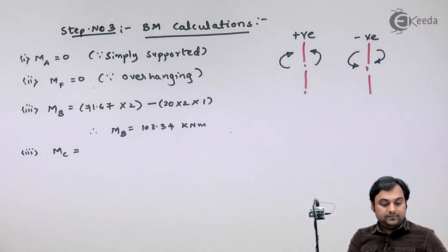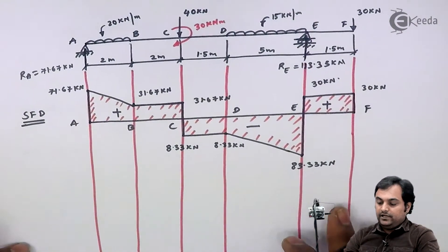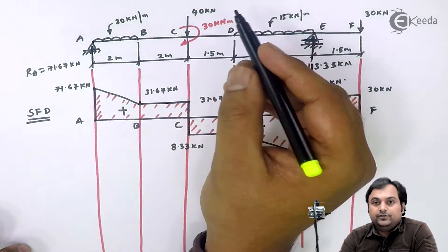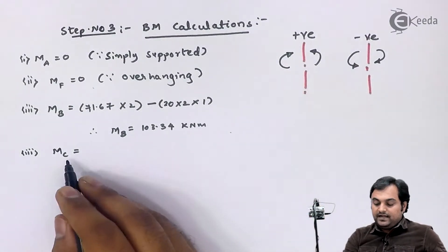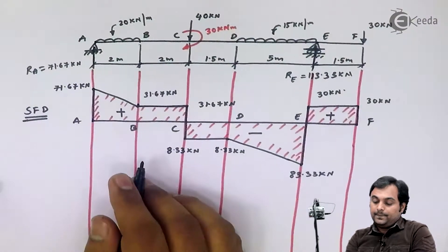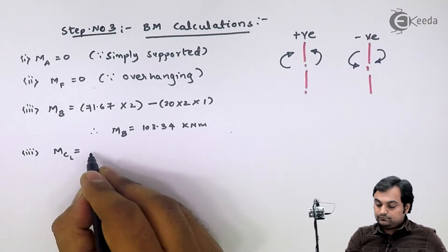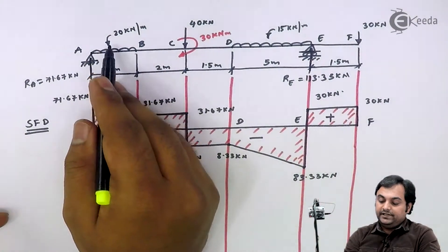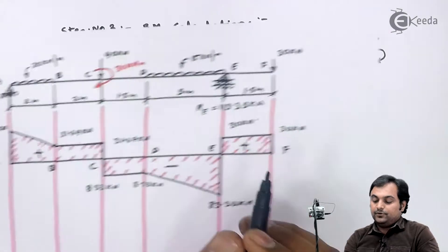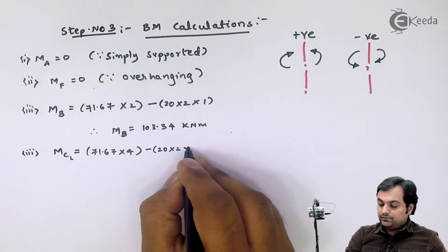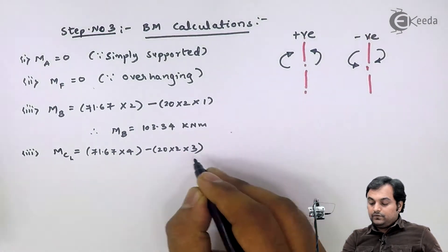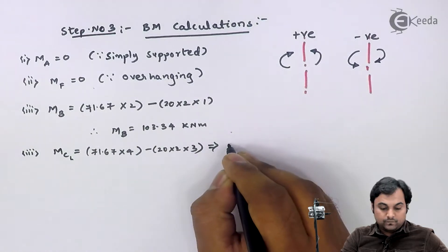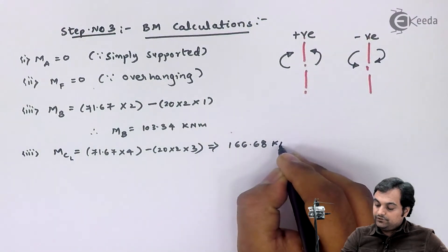For the moment at C, I will get two values — one without considering the 30 kN·m external moment and one with it. The first value, moment at C to the left, equals 71.67 into 4, minus 20 into 2 with a distance of 3 meters from point C, so minus 20 into 2 into 3. This gives 166.68 kN·m, positive.